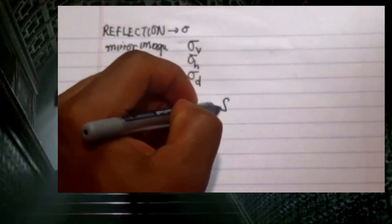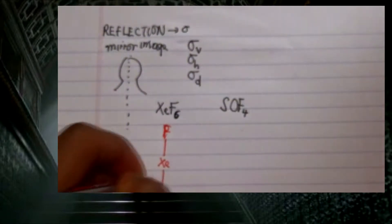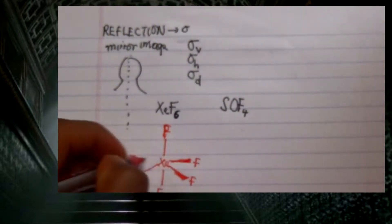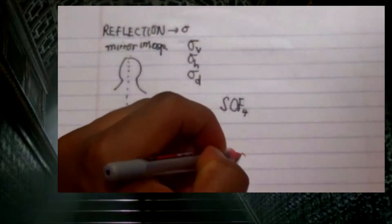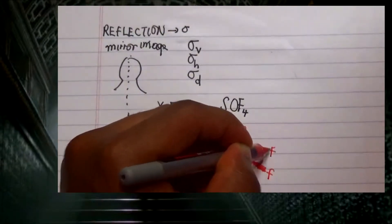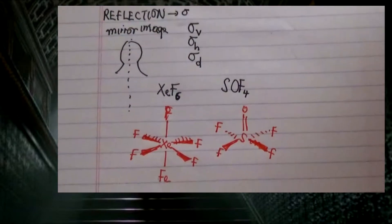Now let's look at a specific example comparing xenon fluoride, which has fluorine atoms, with sulfuryl fluoride. For xenon fluoride, the molecular structure has two axial fluorines and four equatorial fluorines. For sulfuryl fluoride, we have sulfur in the middle with an oxygen at the top, and fluorine atoms arranged around it.